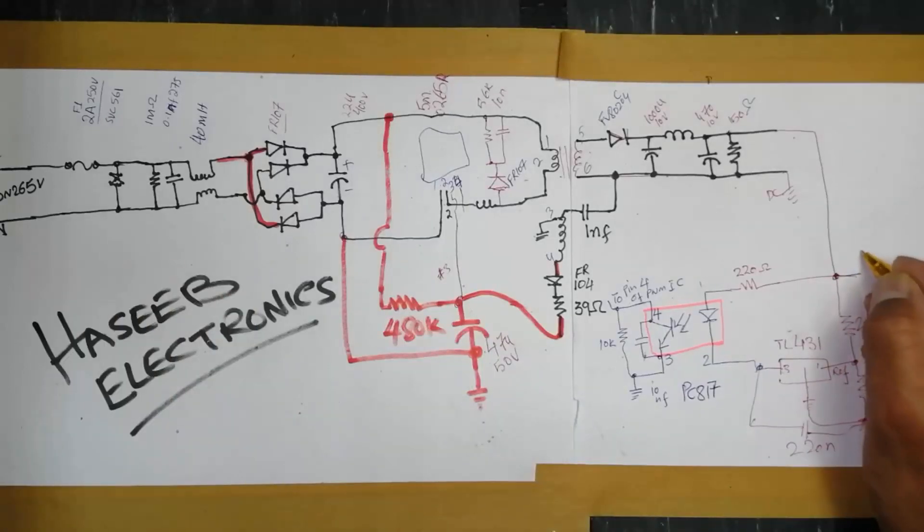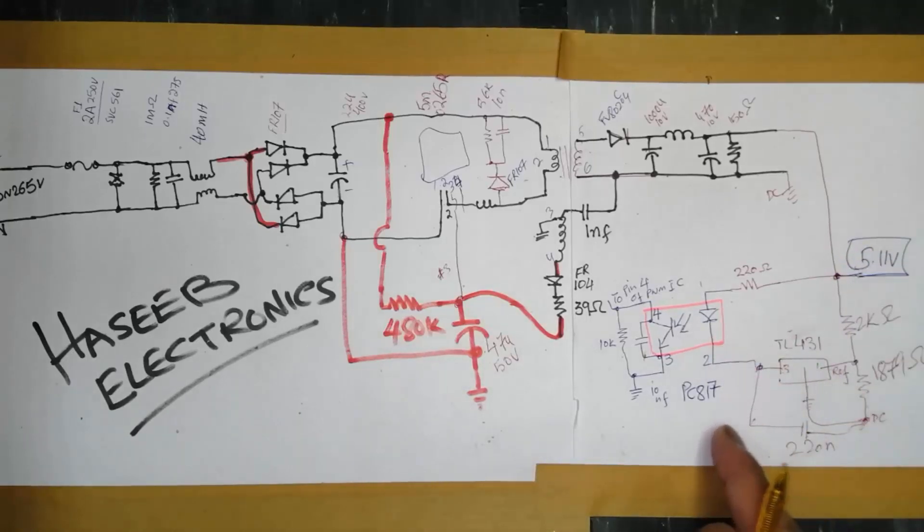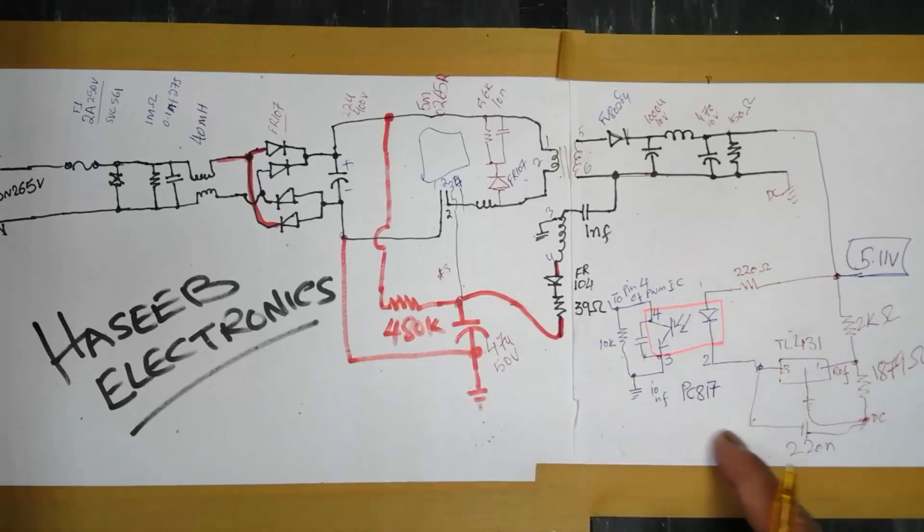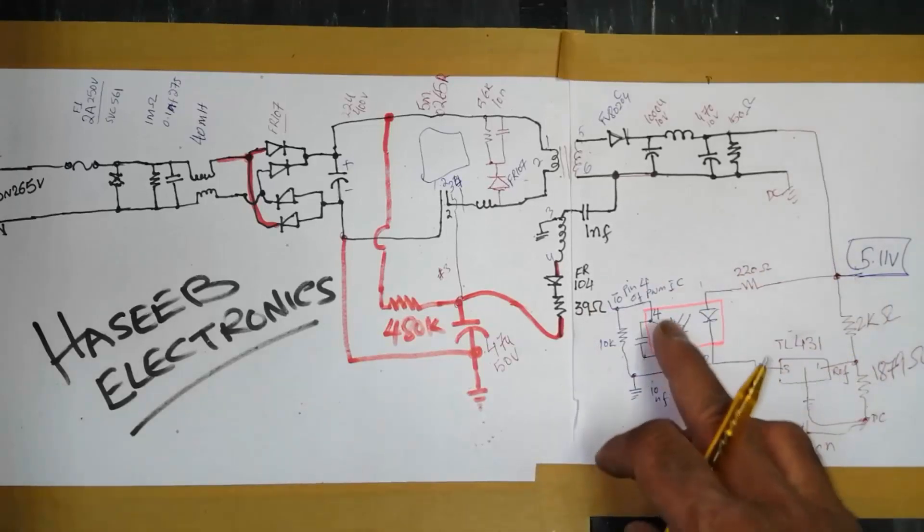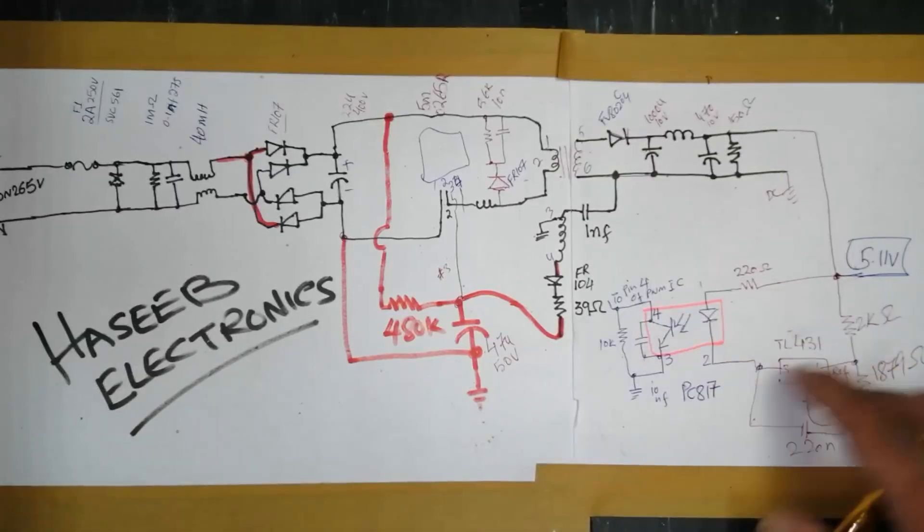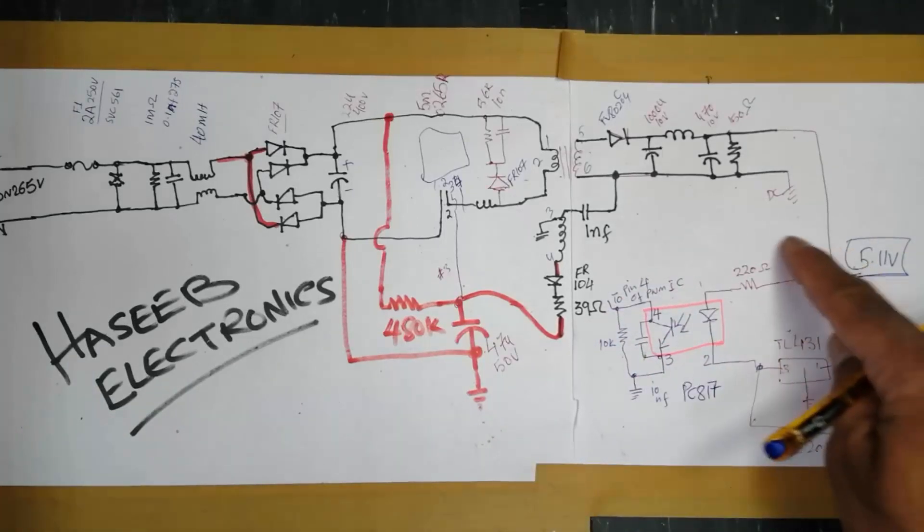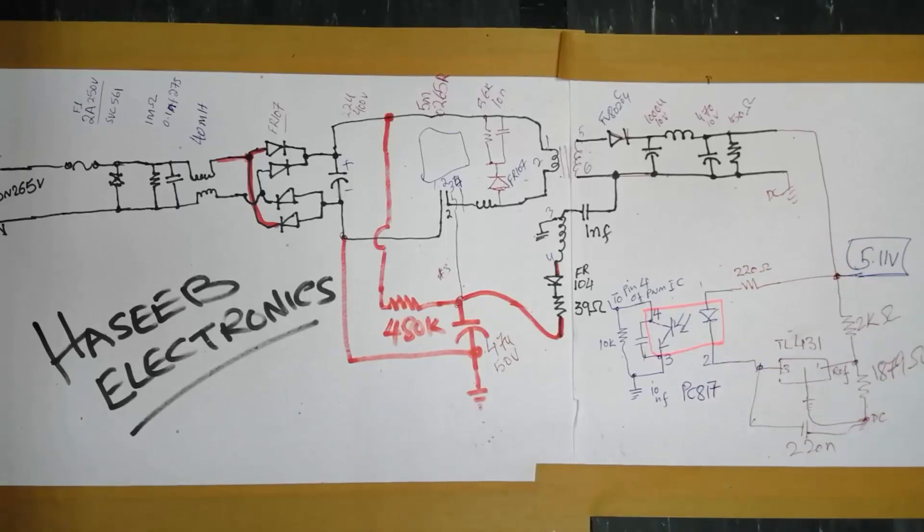In the output we will take 5.11 volt. This is our total circuit. I have another question from one of my friends to discuss this feedback circuit. In the upcoming videos we will discuss this circuit separately, how the optocoupler is working and how this circuit is designed. I hope this video is good for you. If good, thanks for watching. Assalamu alaikum wa rahmatullahi wa barakatuh.